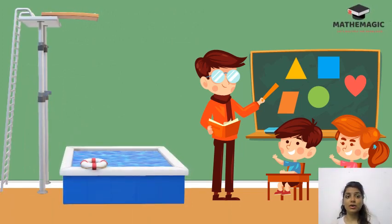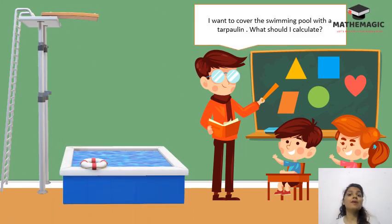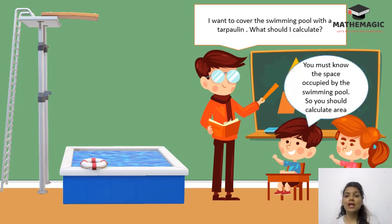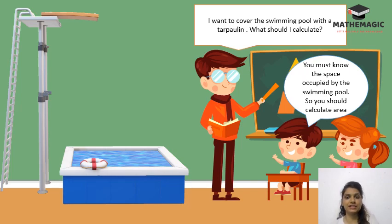Now let us look at the swimming pool. This man wants to cover the swimming pool with a tarpaulin. What should he calculate? He should know the space occupied by the swimming pool, so he should calculate the area.